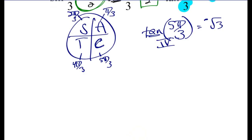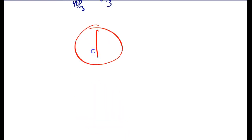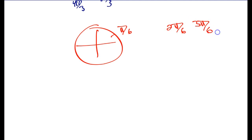When counting by pi/3's, I skip any fraction that reduces. Starting with 1pi/3, then 2pi/3 (doesn't reduce), skip 3pi/3 (reduces to pi), then 4pi/3 and 5pi/3. For pi/6's: start with 1pi/6, skip 2pi/6, 3pi/6, 4pi/6 (all reduce), so the next is 5pi/6.